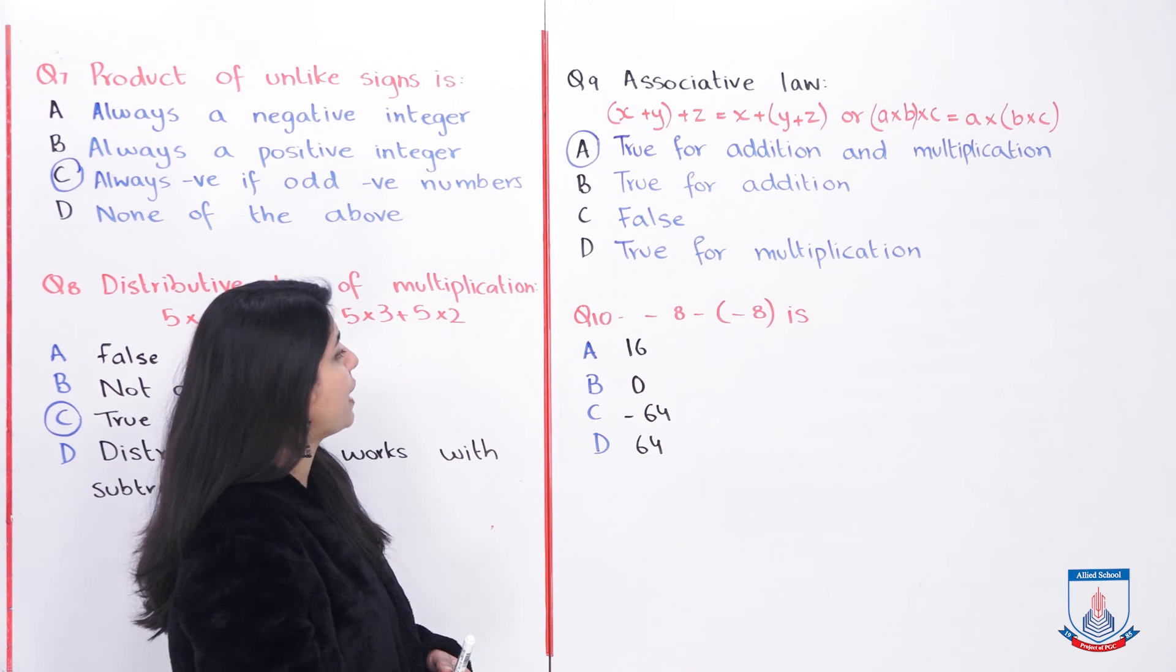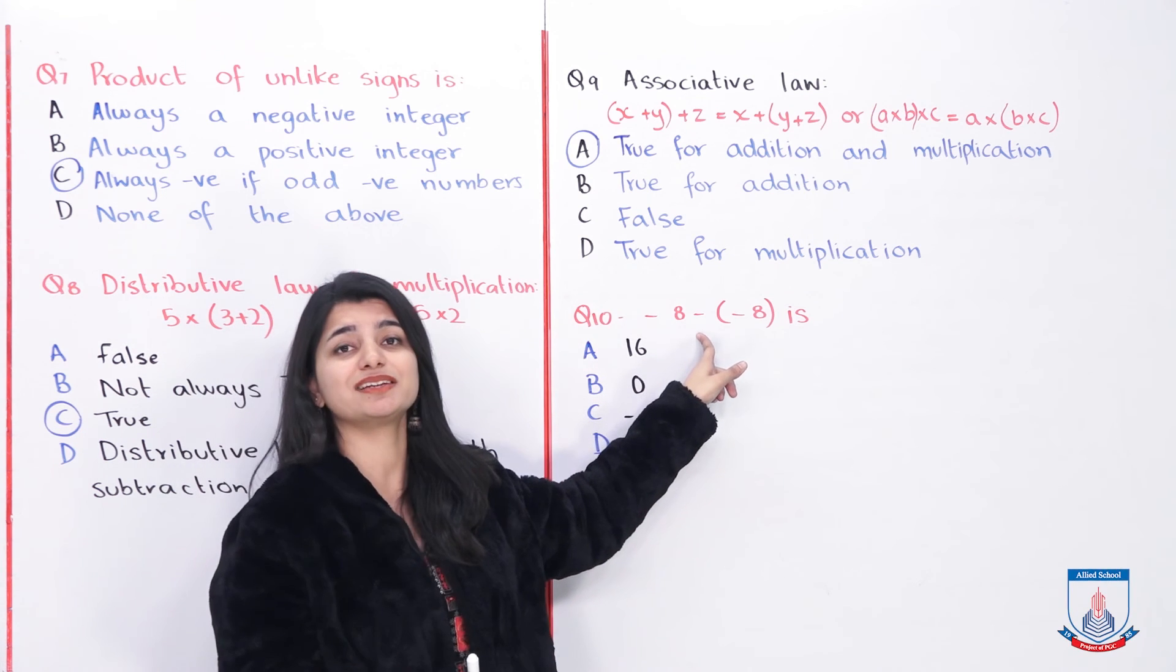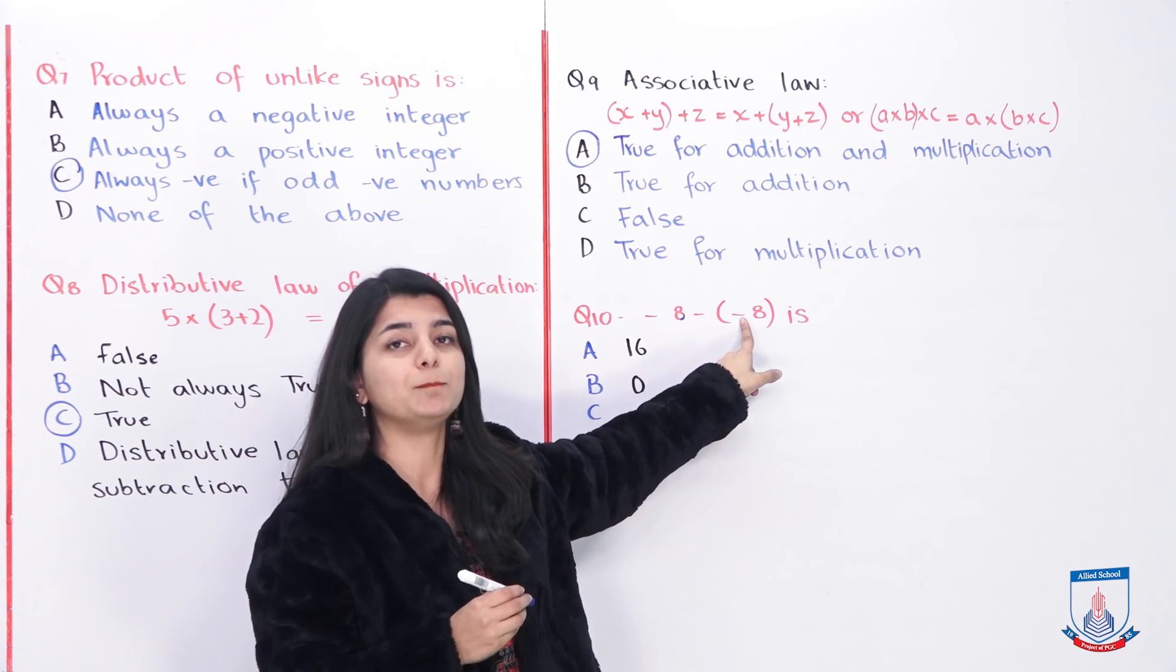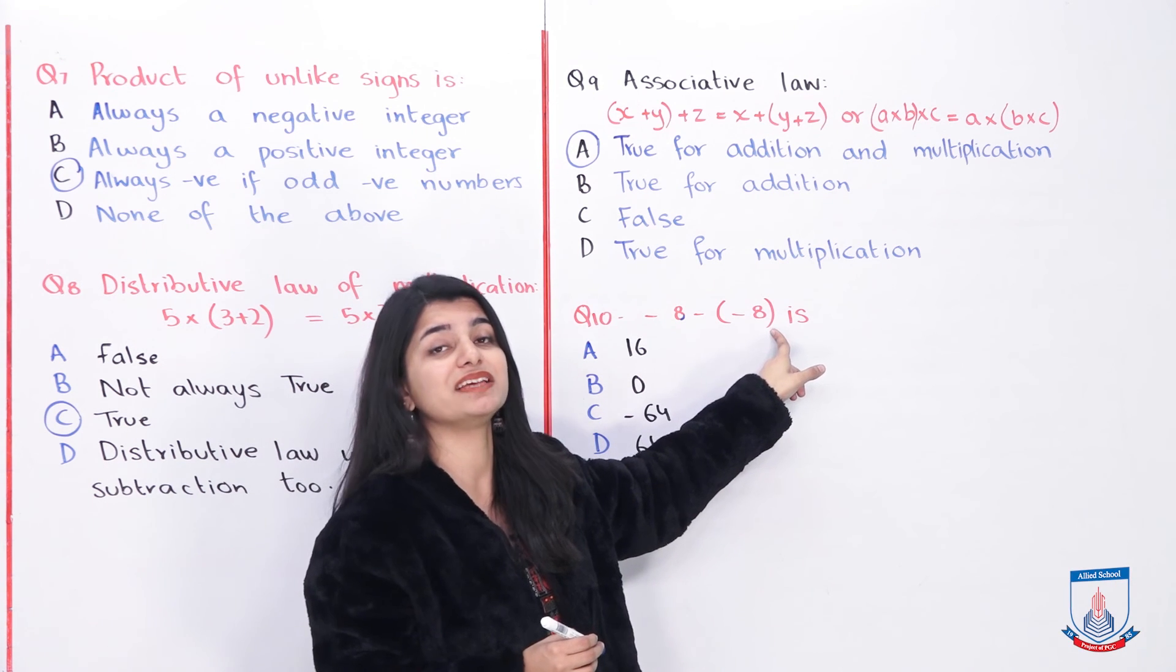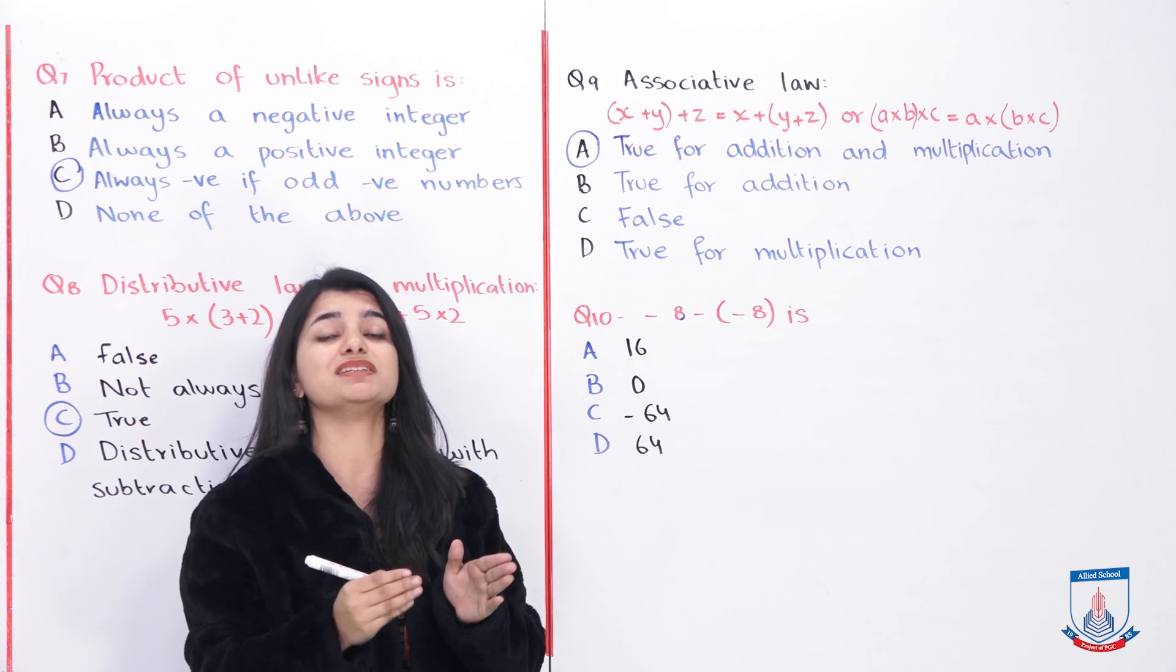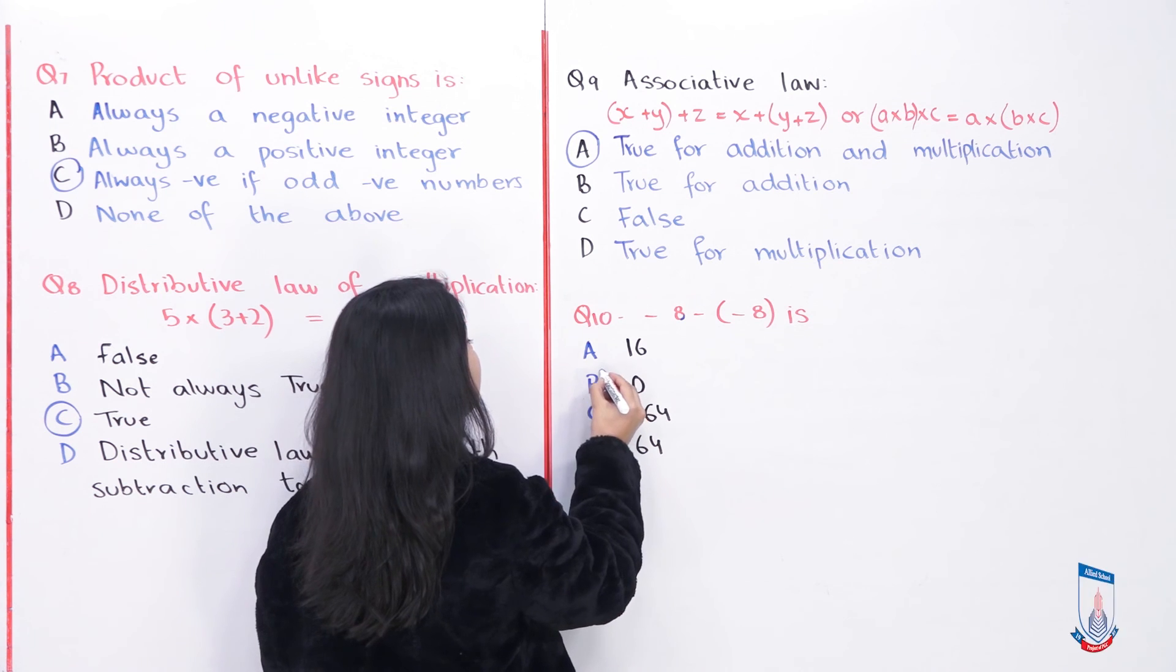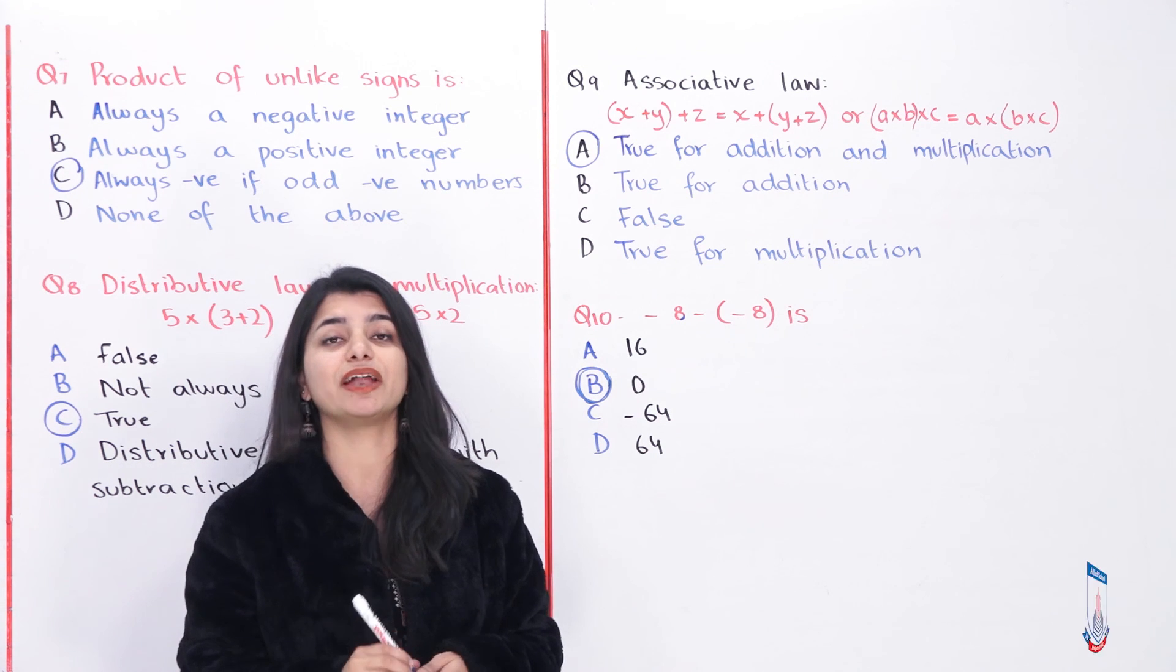MCQ number 10: minus 8 minus negative 8. How will you solve it? First address the bracket. Compare the negative sign with the negative sign inside. What will you get? Because this is negative and inside is also negative, negative multiply by negative is positive. So you have minus 8 plus 8. Now solve this. Minus 8 plus 8 is going to be what? Because minus 8, if you solve it with plus 8, negative and positive are different signs, you need to subtract them. 8 subtracted from 8 gives you what? 16? No, 0. Yes. Why? Because you have subtracted 8 by 8, and that results in 0. So option B is the correct option for this question.